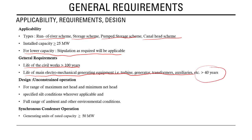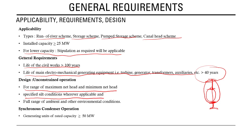Design considerations require that units be able to operate unconstrained within the range of maximum and minimum net head, meaning they should operate without restriction across the full range of water levels. For specified silt conditions — particularly relevant for Himalayan projects — unconstrained operation must be maintained. The unit must also operate over the full range of ambient and environmental conditions defined for the site.